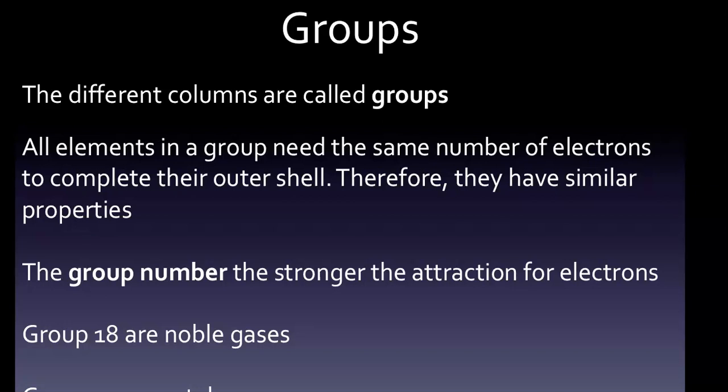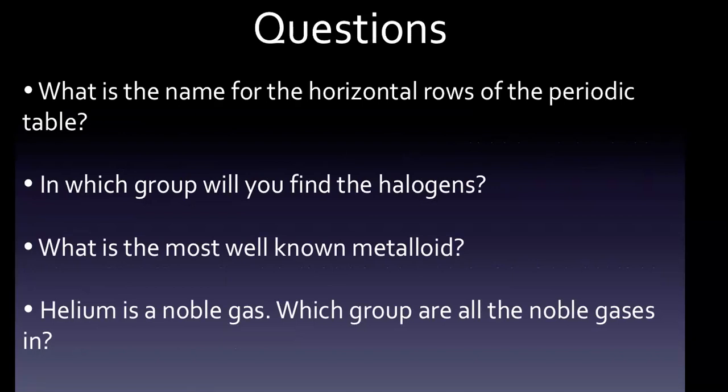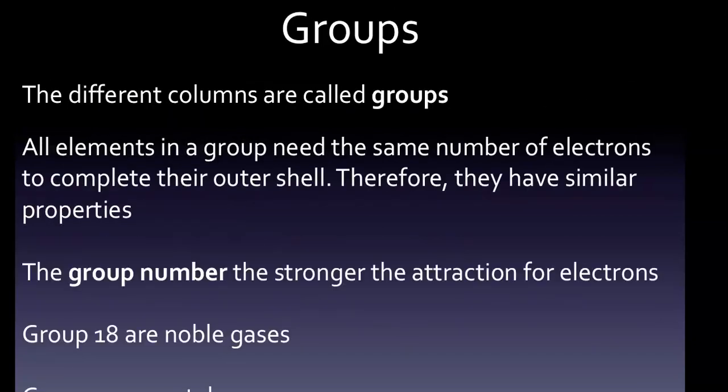On the right-hand side of the table in group 17, you will find the halogens. Halogens are very reactive and poisonous. There was a halogen question: in which group will you find the halogens? Right, we just said group 17.